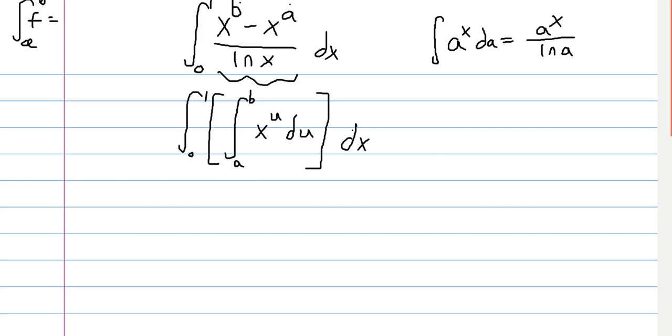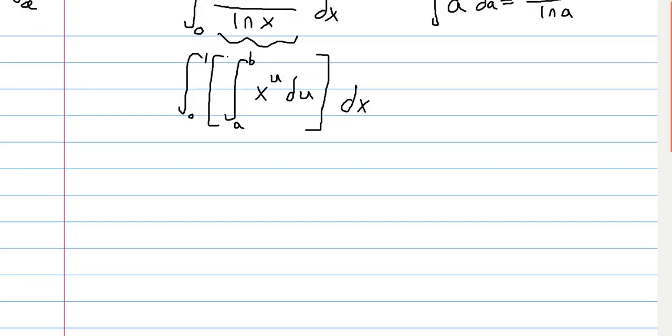And so what we can do is swap the integral signs. After doing that, we get the integral from zero to one of x to the u dx and then the integral from a to b of that du.